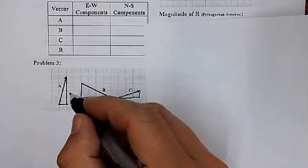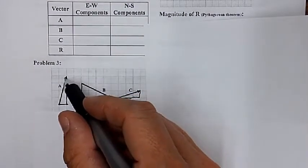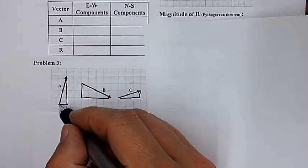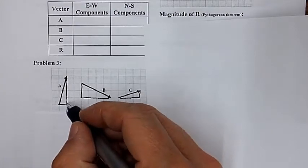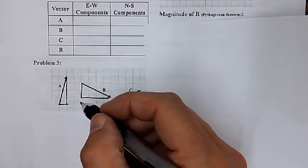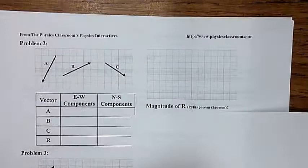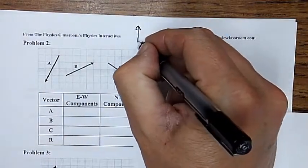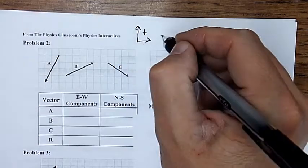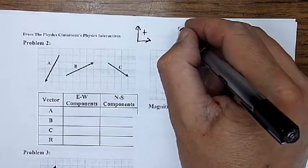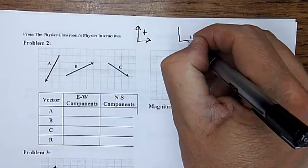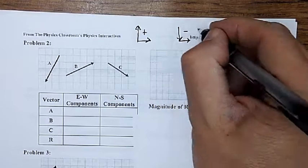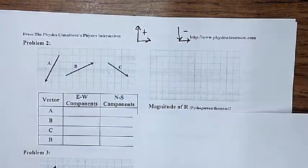So remember on these, always start with the opposite side of the arrow. Meaning that when you go up or to the right, those are all positive, but when you go down and to the left, those are negative.